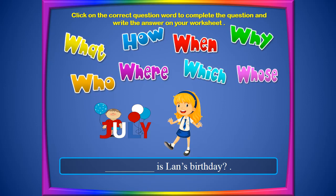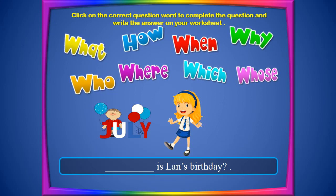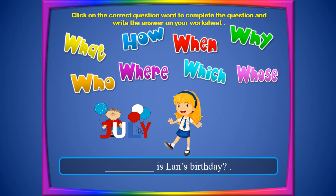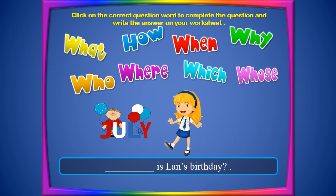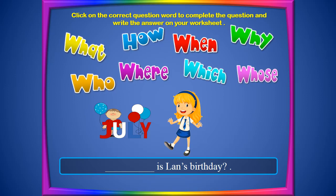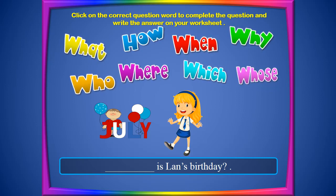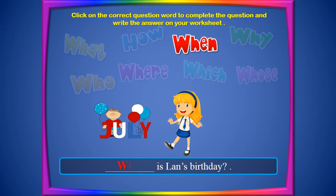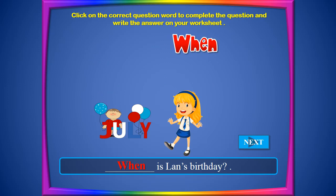This is the girl, and the month shown is July. We can see this is about his last birthday. To ask about July, we need to use 'when.' So the question is: When is his last birthday? The answer is July.